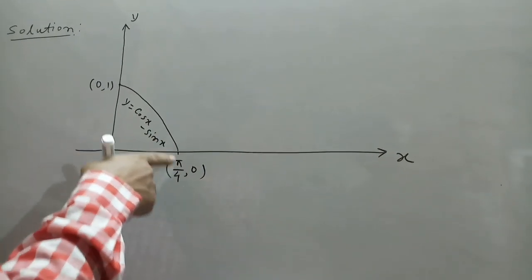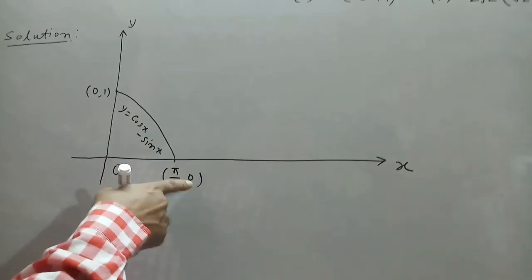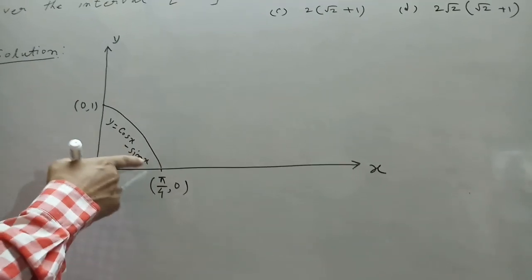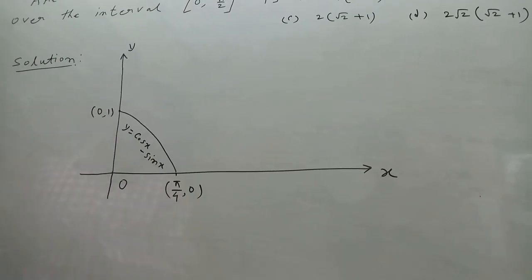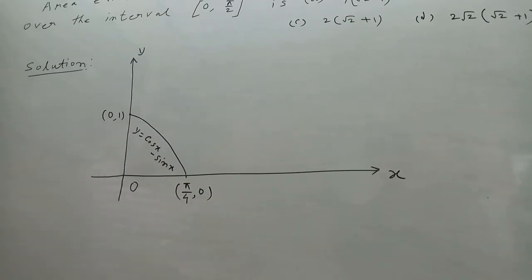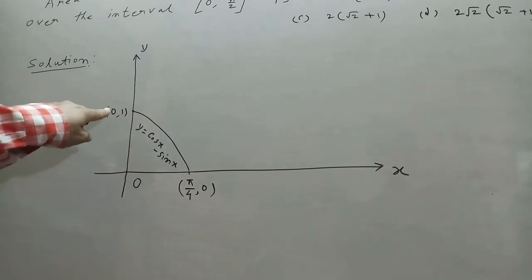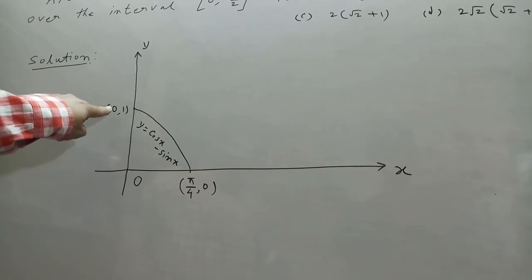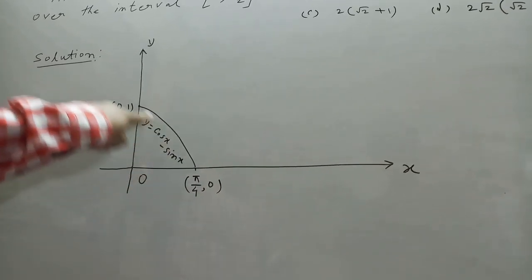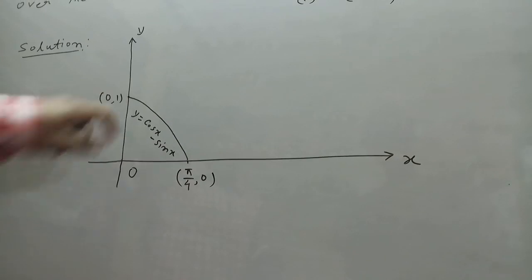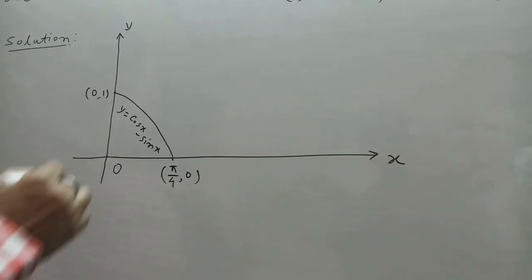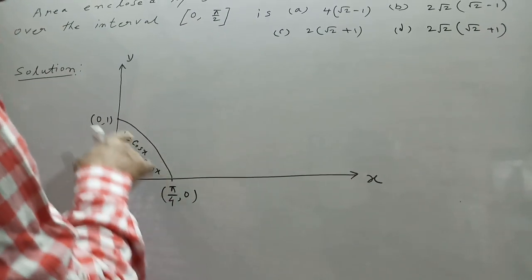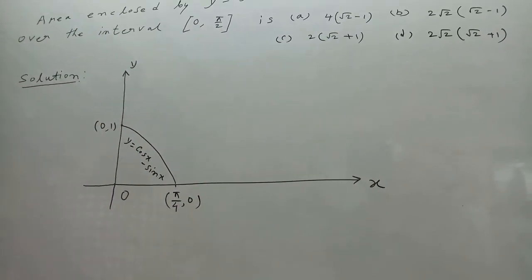This curve passes through the point (π/4, 0) and through (0, 1), because at x = 0 the value of this curve is 1.